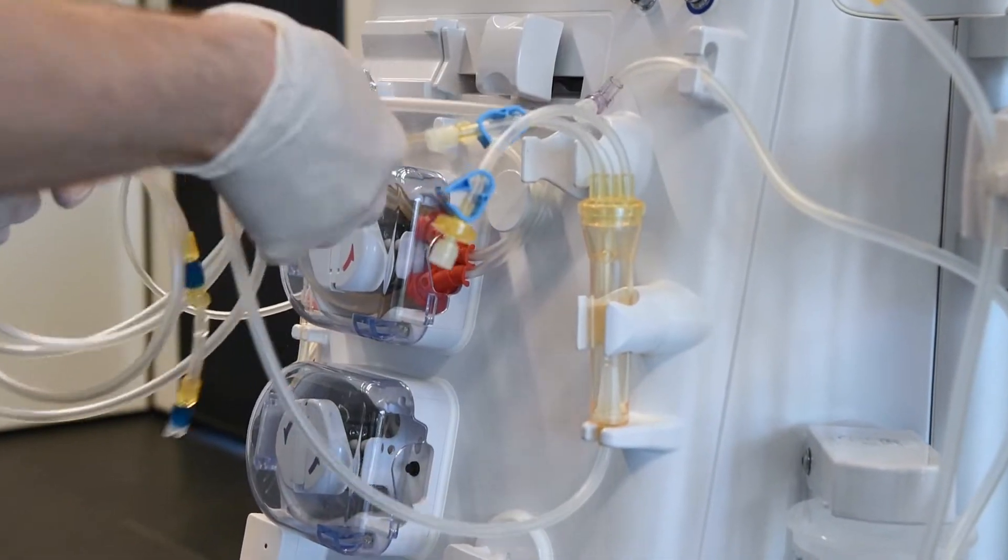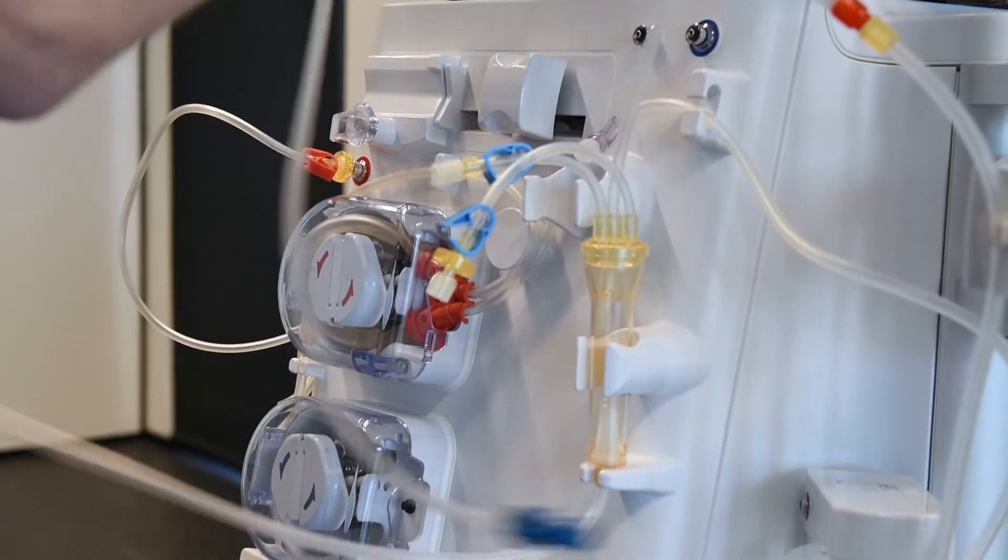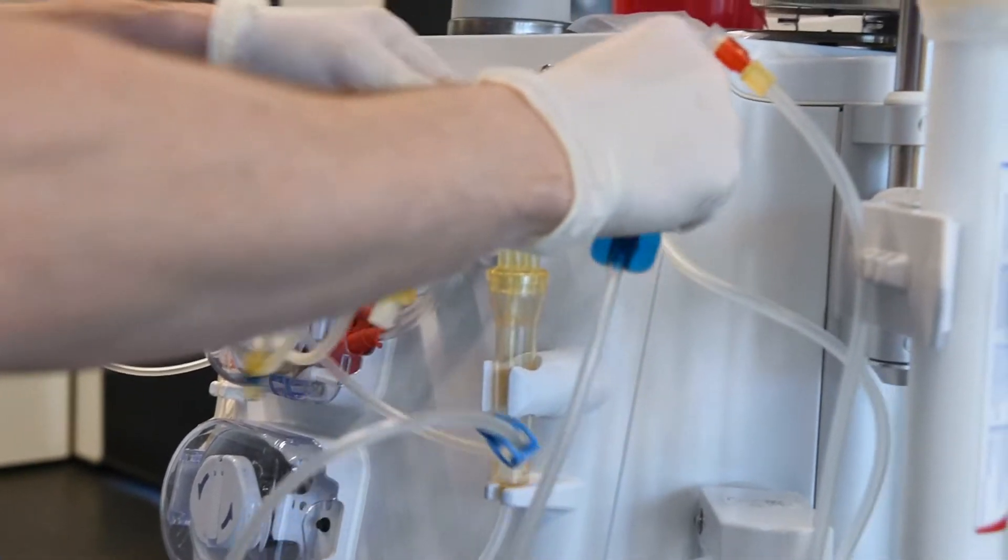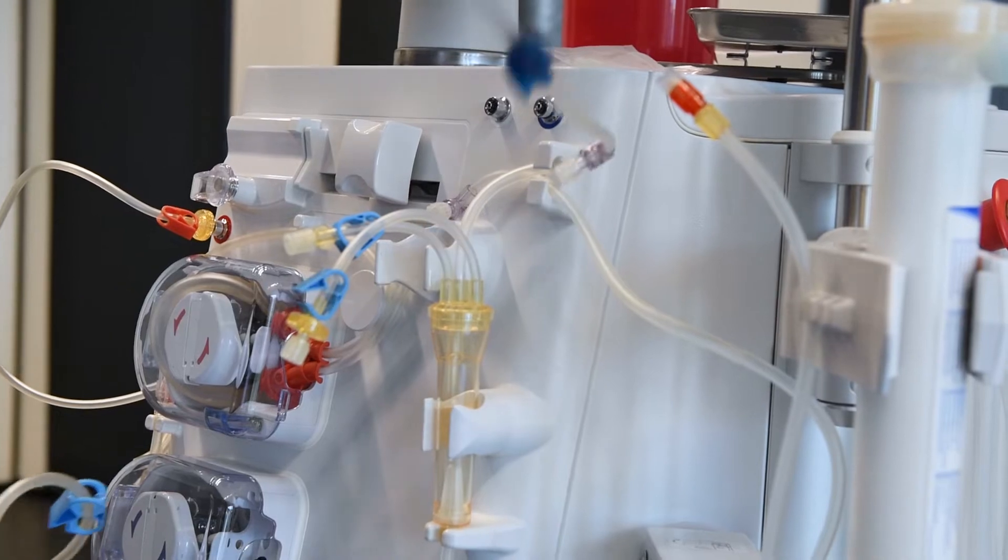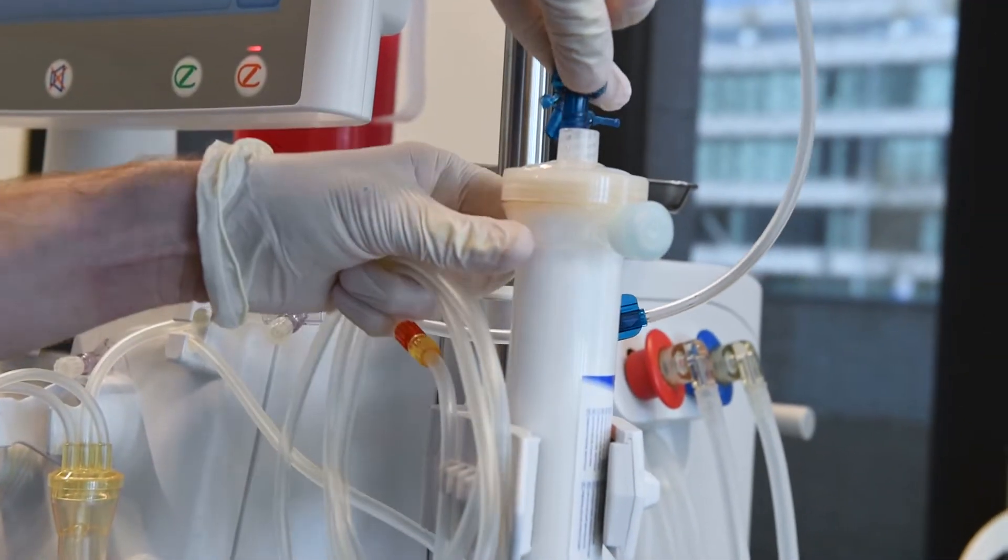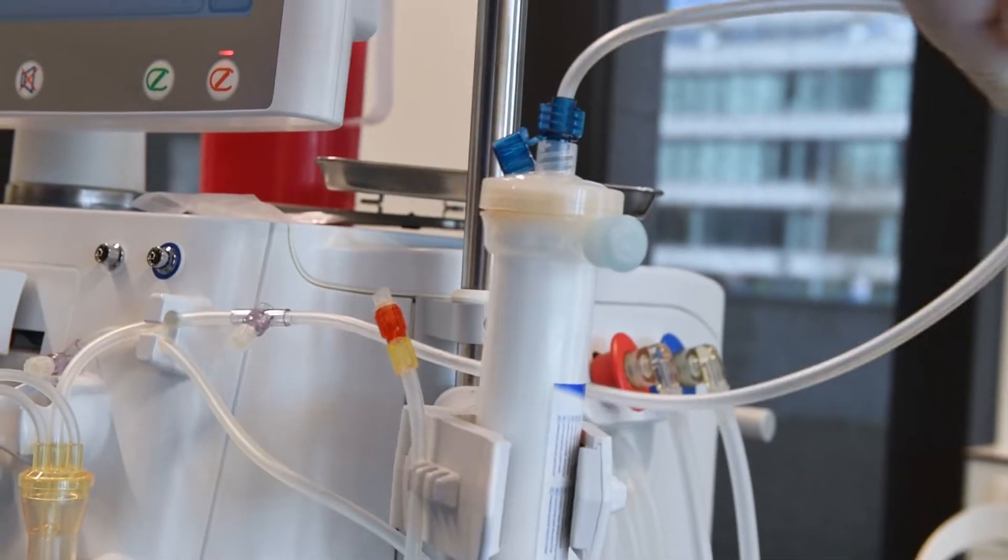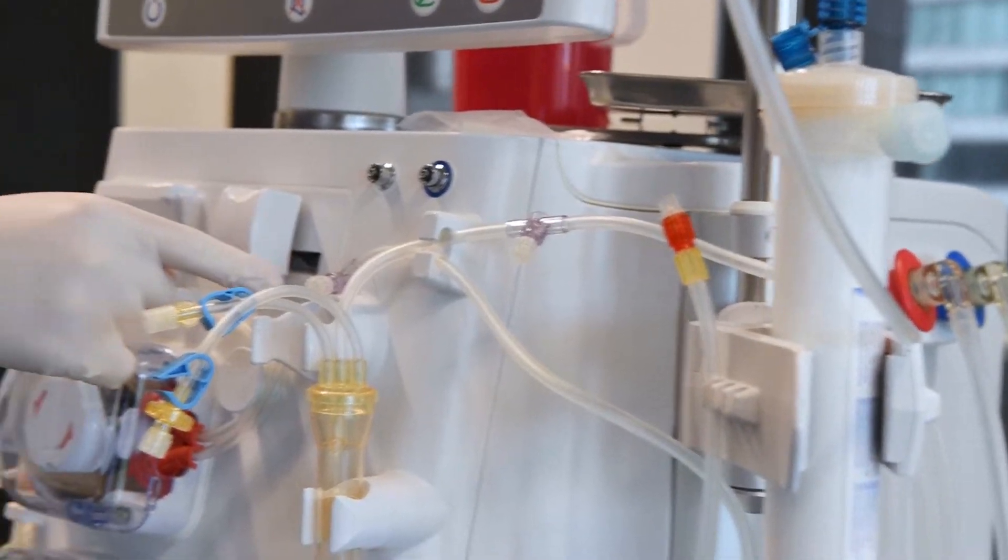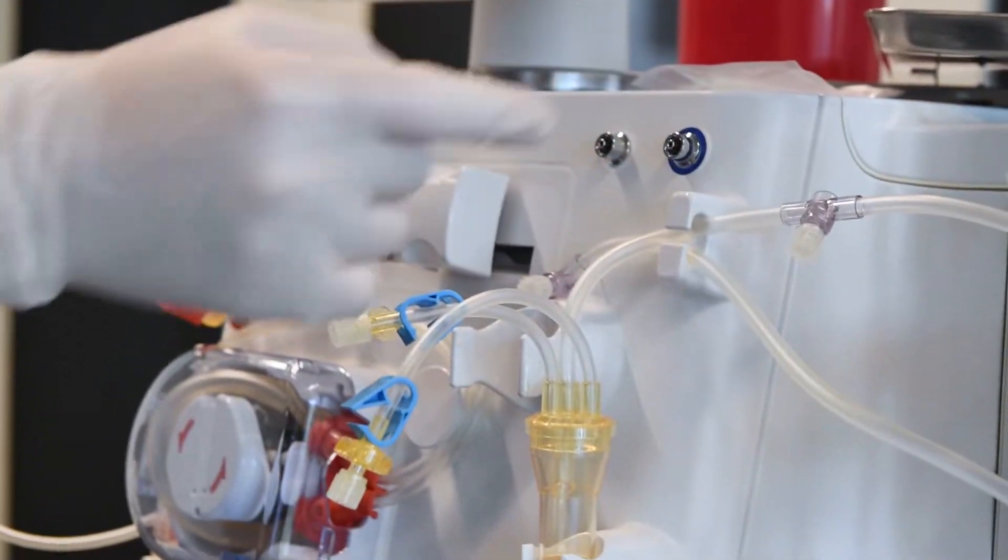Place the venous chamber in its holder and use the line holder for the bloodline leading to the dialyzer. This way you have easy access to the pre and post dilution ports.